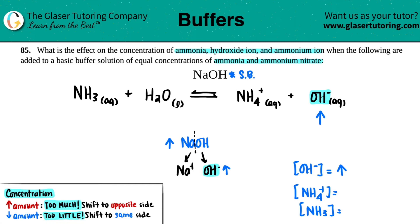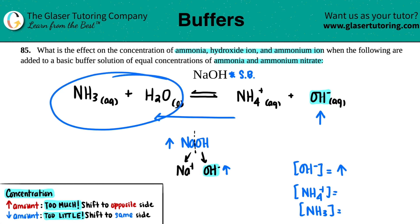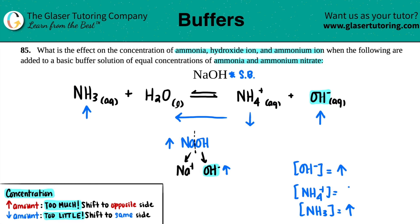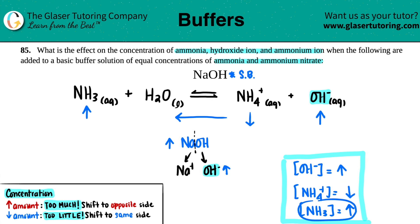This comes back to Le Chatelier's principle. If you have too much of something, you will always shift to the opposite side. So in terms of which arrow predominates, if you have more of your products, you will always shift to the other side. In this case, we will be predominantly going to the left. If you're going to the left toward the reactants, the ammonia is going to increase. And since we're going to the reactants, what's happening to the product? You have to decrease that — so ammonium ion would decrease.